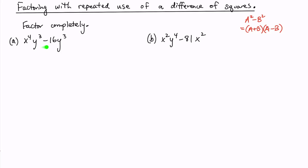But the first rule in factoring is, look for a greatest common factor. What do these two terms have in common? They both have a y to the third power. So why don't we take that GCF and factor it out.